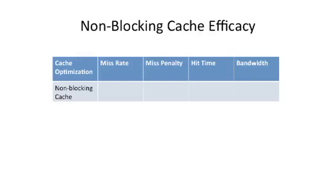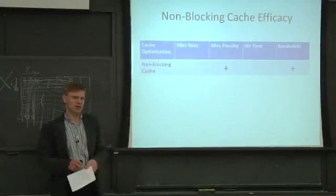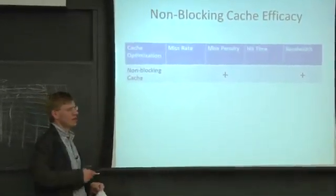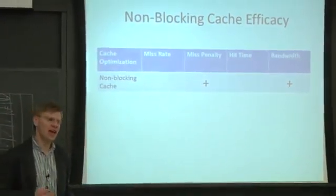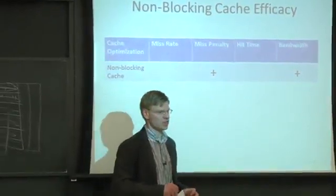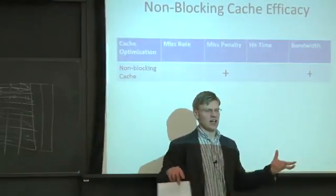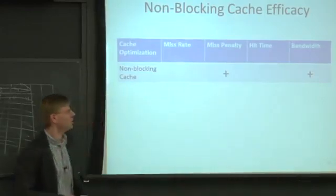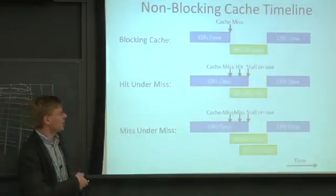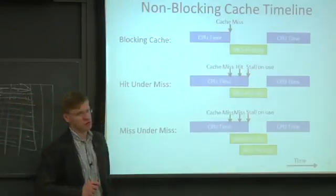Non-blocking caches can effectively increase the bandwidth to your lower levels of cache such as L1s. They can also increase bandwidth by merging misses — the miss status handling register allows multiple cache misses to merge into one transaction. Your effective miss penalty is obviously lower because, as we saw in the timeline, we've overlapped the miss penalty with other useful work.